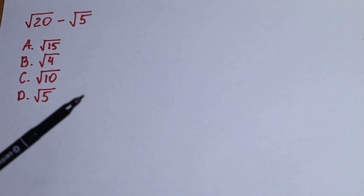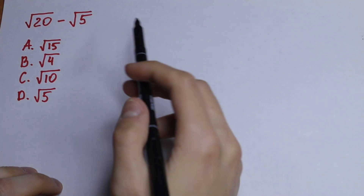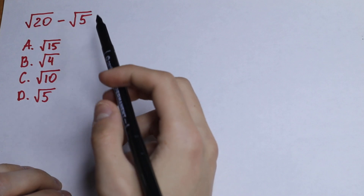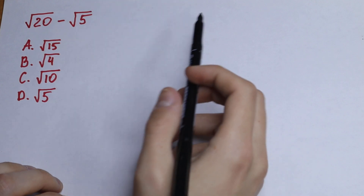Hello everyone, welcome back to MathMood. Here we have an interesting algebra problem: square root of 20 minus square root of 5. How can you solve this?